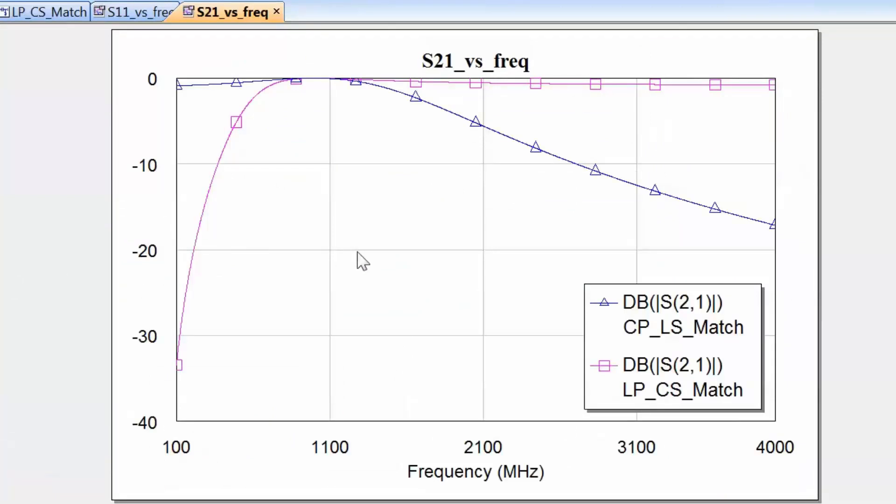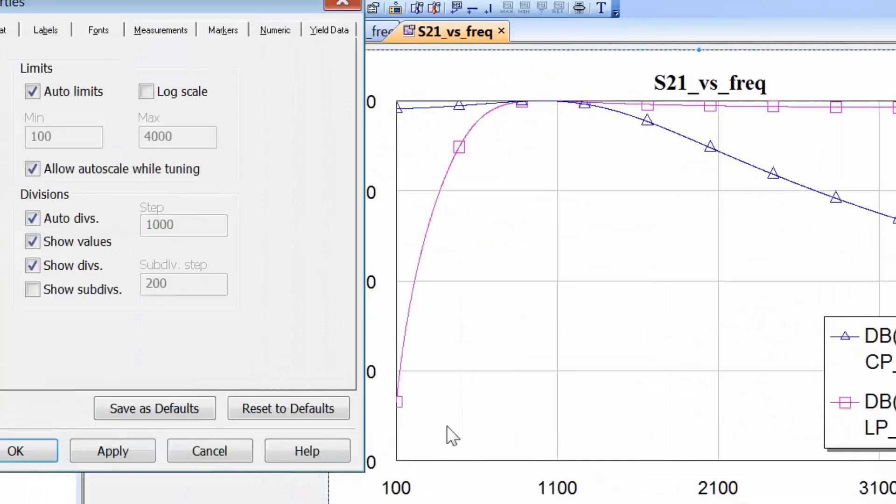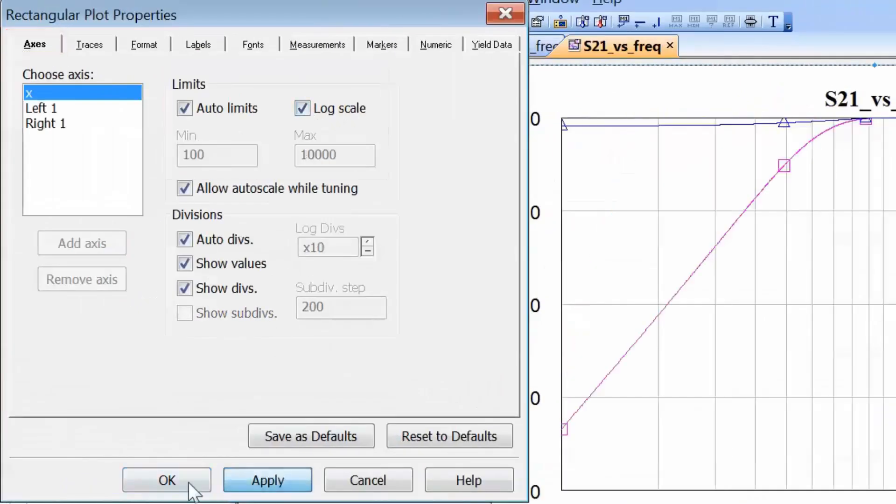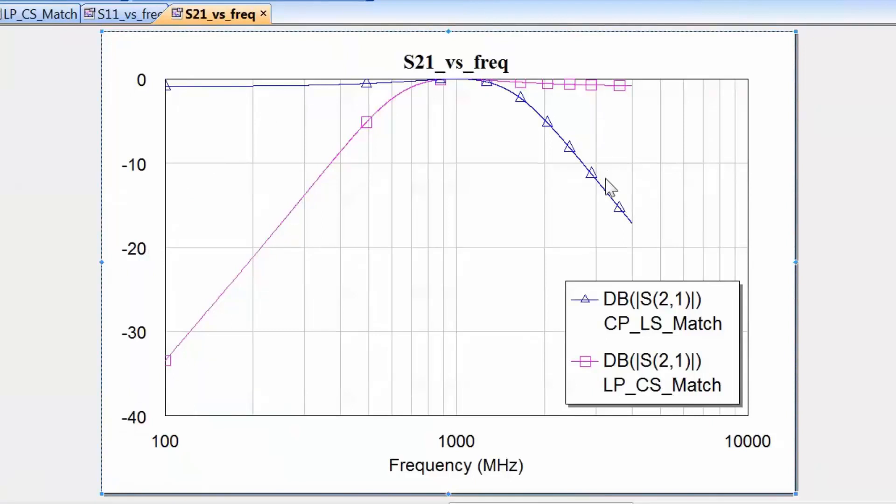So you can see that we have very different responses for the two networks. One is clearly a low pass network which is represented by the blue curve here and the other one is clearly a high pass network. For example the high pass configuration could be very useful if you had a transistor that had a lot of gain at lower frequencies and you wanted to avoid oscillation, so you wanted to avoid lower frequency signals to be amplified. If you had this as an input matching network then you would avoid those signals going into the transistor and hence you would reduce the risk of oscillation or unwanted components being amplified. As we know, frequency responses often enough are represented with a logarithmic scale, so we could just right click on the graph, go to properties and then choose to have a logarithmic scale for our x-axis.